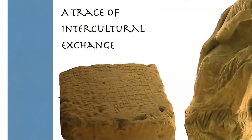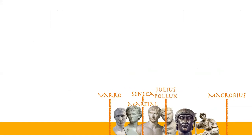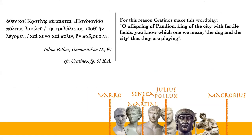Considering these facts, we can say that the Ludus Latrunculorum showed traces of intercultural exchanges. In fact, Varro informs us about the possible Greek etymology of the name Latruncoli, which should come from the word Latrones, since the Latrones were the mercenaries at the king's side, who was called Latus. Also Julius Paulus, in the second century AD, informs us that an Athenian writer of the fifth century BC wrote a verse which in the meanwhile had become obscure, and so Julius Paulus acts to explain it.